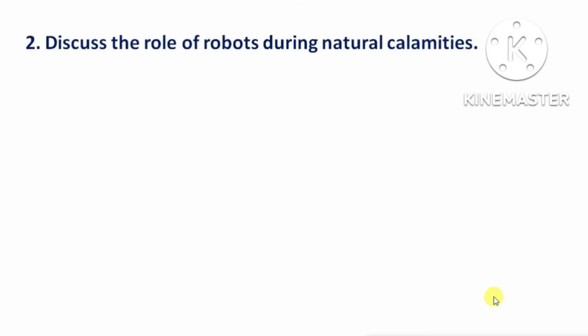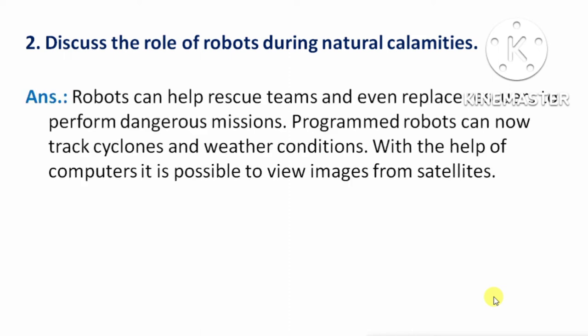Next question: discuss the role of robots during natural calamities. Answer: Robots can help rescue teams and even replace rescuers to perform dangerous missions. Means, robot rescue team की help कर सकते हैं, यहाँ तक कि rescuers को भी replace कर सकते हैं dangerous missions को perform करने के लिए। Programmed robots can now track cyclones and weather conditions — अब वो cyclone को भी track कर सकते हैं और weather condition को भी बता सकते हैं। With the help of computers, it is possible to view images from satellite.